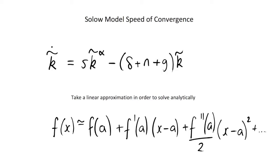In this video we're going to be looking at the speed of convergence in the Solow model. This means if we have some sort of shock to the economy, or if we're just not at the steady state for whatever reason, it's how long is it going to take us to converge to our steady state.